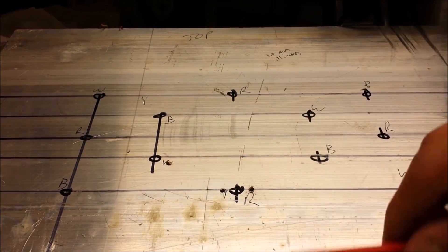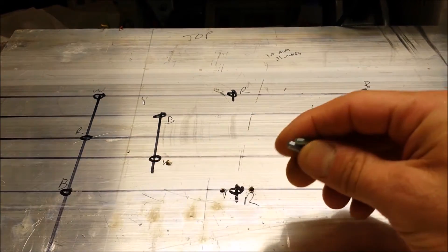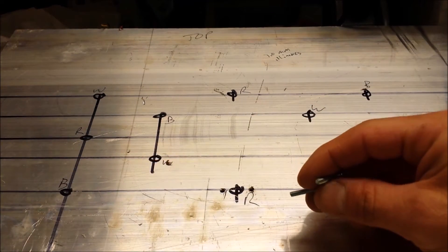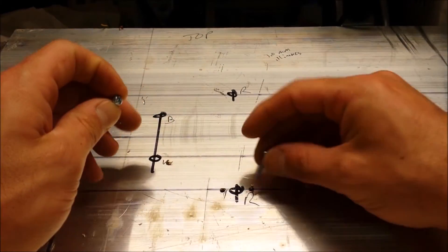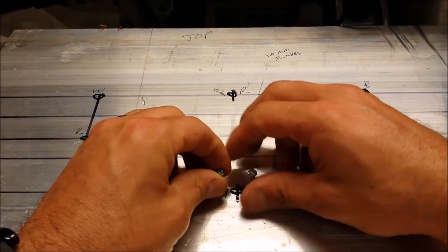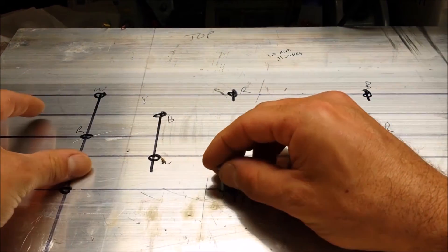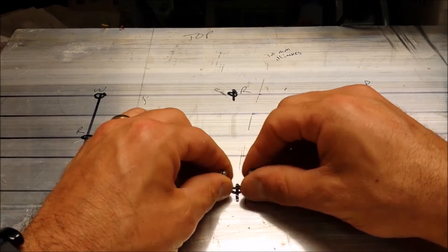Now I use the tap and die set that I have for these screws and I can't remember, I think these are 6-32s. And now these will thread right into these holes and that's what I actually hold the LED in place.